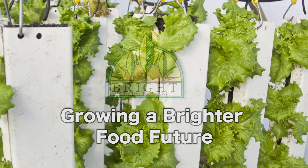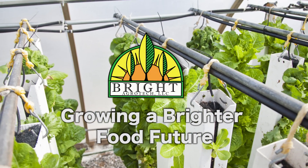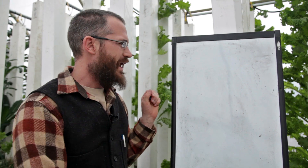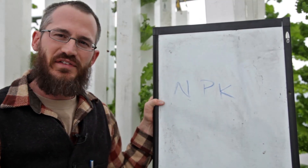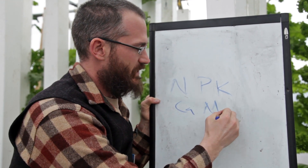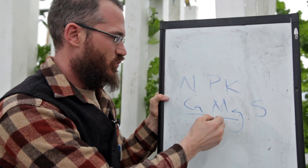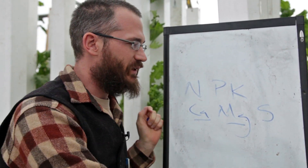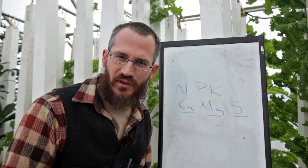Hey, this is Nate Story with Riot Agrotech, and today as part of our nutrient series I'm going to talk quickly about sulfur. We have the primary plant nutrients — everyone's seen this as NPK — but then our secondary macronutrients are calcium, magnesium, and sulfur. We've already talked about calcium, we've chatted about magnesium pretty quickly, and today I'm going to quickly address sulfur because a lot of people are concerned about it.